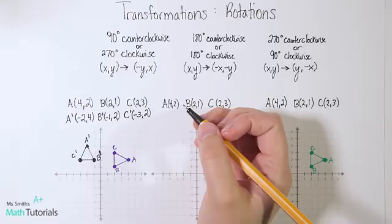Now you try this one. Rotate the following points 180 degrees. Notice I didn't specify counterclockwise or clockwise, because it doesn't actually matter — it could be either one. Sometimes teachers will throw that at you hoping you'll second-guess yourself, but don't let it trick you. It doesn't matter which direction — you'll end up at the same point. I will post the answer in the description below this video. This has been Ms. Smith's Math Tutorials.